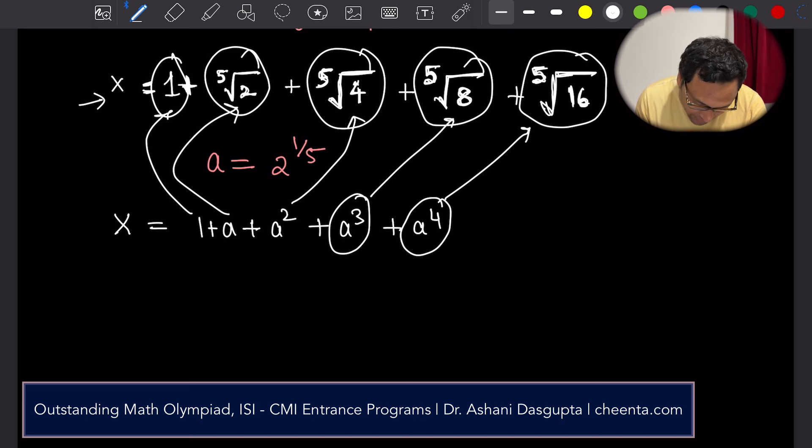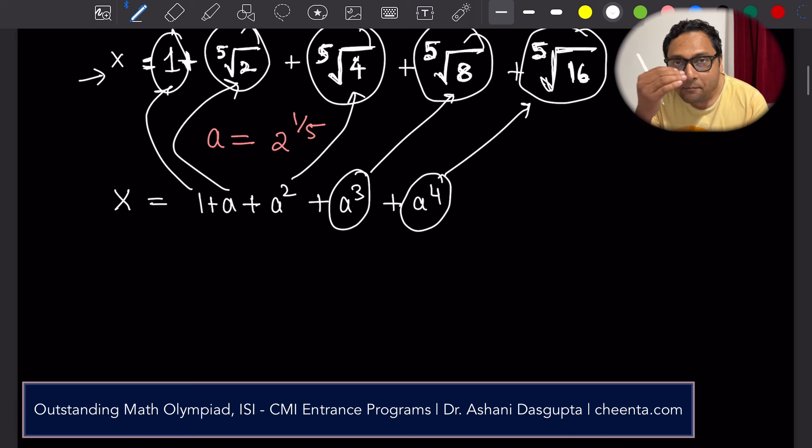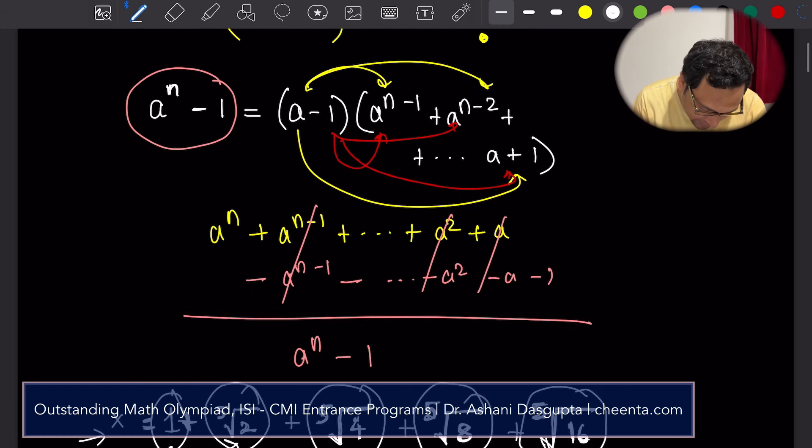Okay, so now we immediately see a match with the previous factorization that we just talked about. This one. Only in this case, n should be equal to 5.